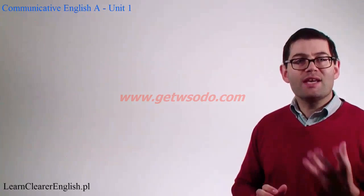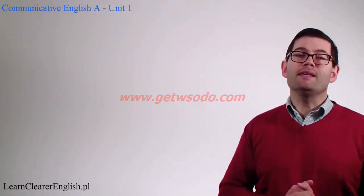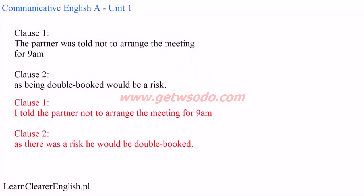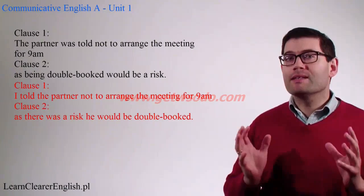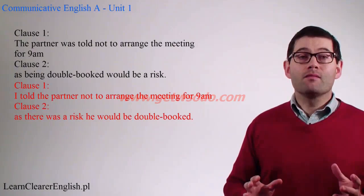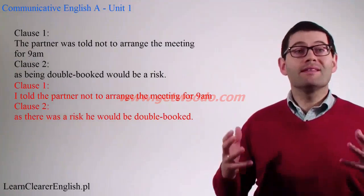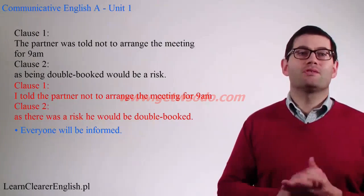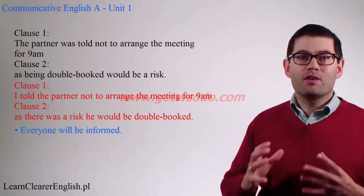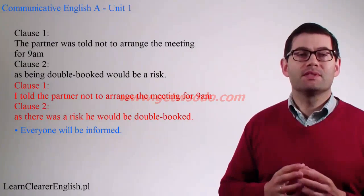Let's change the original sentence to see what it would look like in the active voice. As you can see, I've introduced some possible subjects — and look at the effect it has on the sentence. Suddenly, we know everything. Nothing is missed out. Everyone who might read this email will be informed and know that actions have been performed. The communication is clear and the structures are simple to understand.